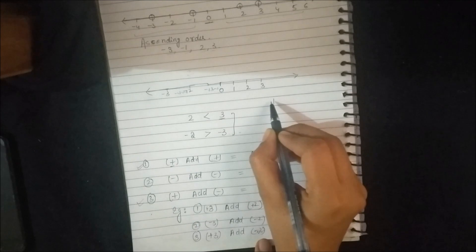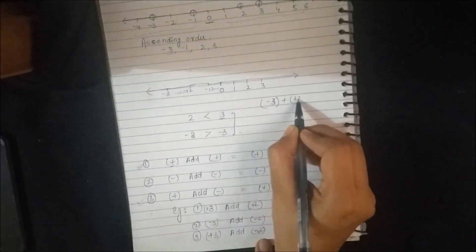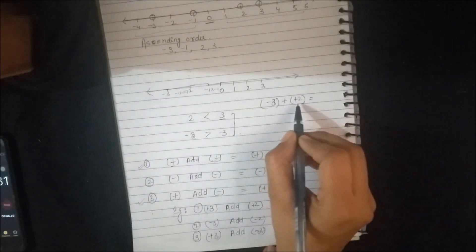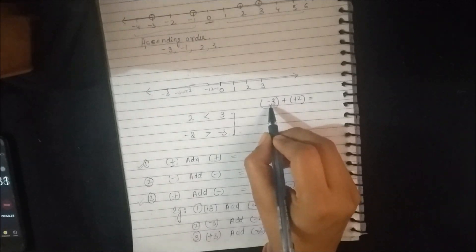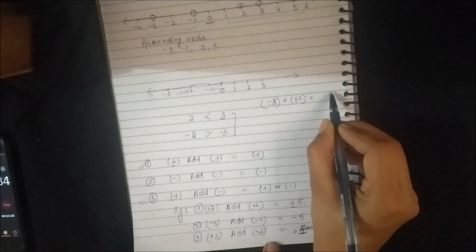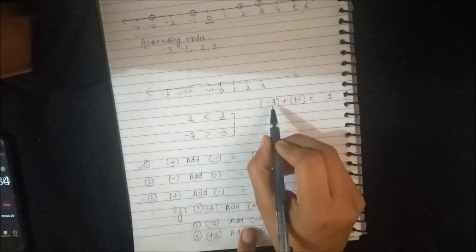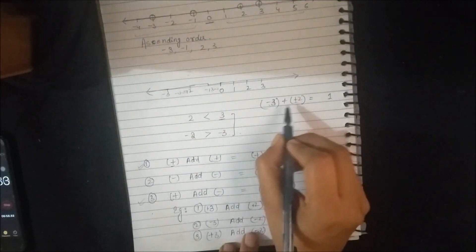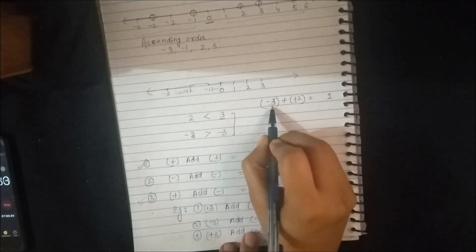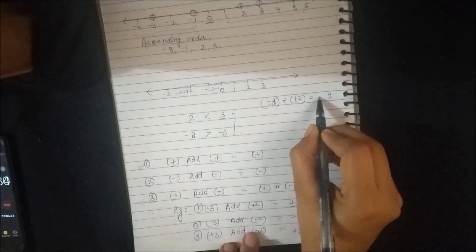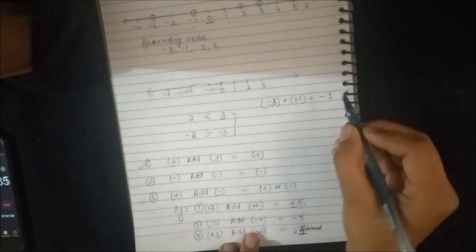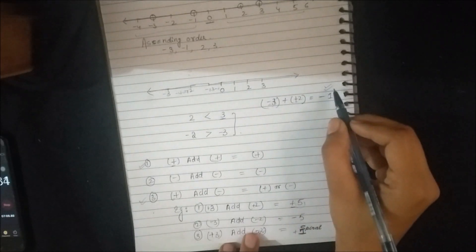Consider another example: if I take negative 3 and positive 2, these two will be subtracted because one is positive and the other is negative. The answer is 1, and the symbol depends on which integer is greater. Since 3 is the greater integer and carries a negative sign, the answer will also receive a negative symbol — minus 1. We will practice more questions on these.